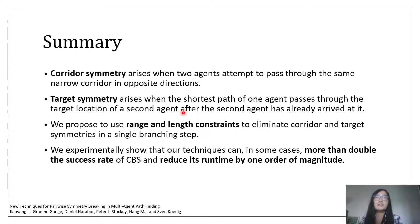To summarize, in this work, we study corridor and target symmetry for the multi-agent path finding problem. We propose range and length constraints to eliminate corridor and target symmetries in a single branching step. We show experimentally that our techniques can, in some cases, more than double the success rate of CBS and reduce its runtime by one order of magnitude. This ends my talk. Thanks for listening.